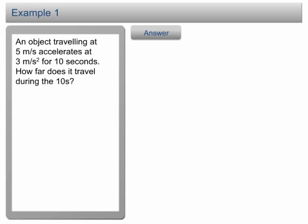Example 1. Let's look at this example to see how we can use an equation of motion to solve a problem of a moving object. An object traveling at 5 m per second accelerates at 3 m per second squared for 10 seconds. How far does it travel during the 10 seconds?